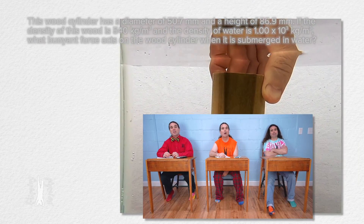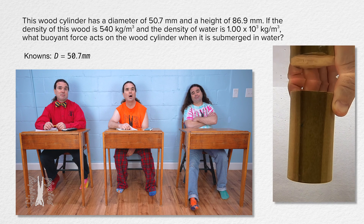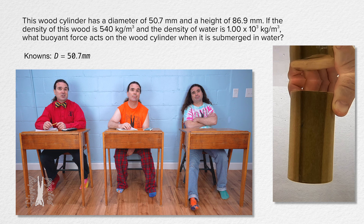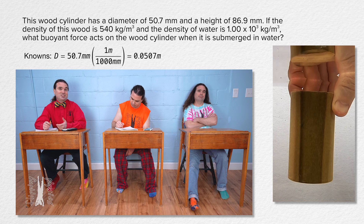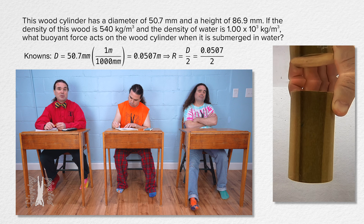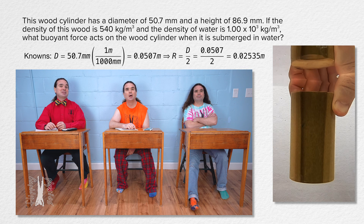Okay, let's see. We know the diameter of the cylinder is 50.7 millimeters. However, let's convert that to meters because the densities are given in terms of meters. So multiply it by 1 meter over 1000 millimeters to get 0.0507 meters. And we probably want to use the radius in our equations; radius equals half the diameter, or 0.0507 divided by 2, or 0.02535 meters.